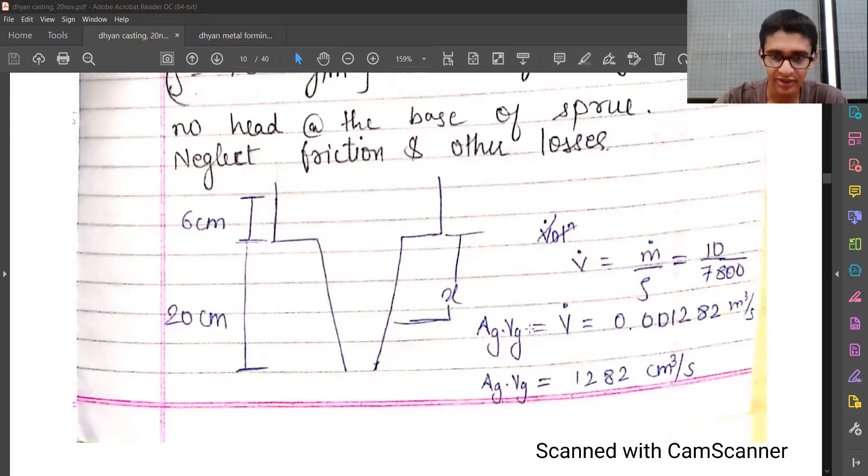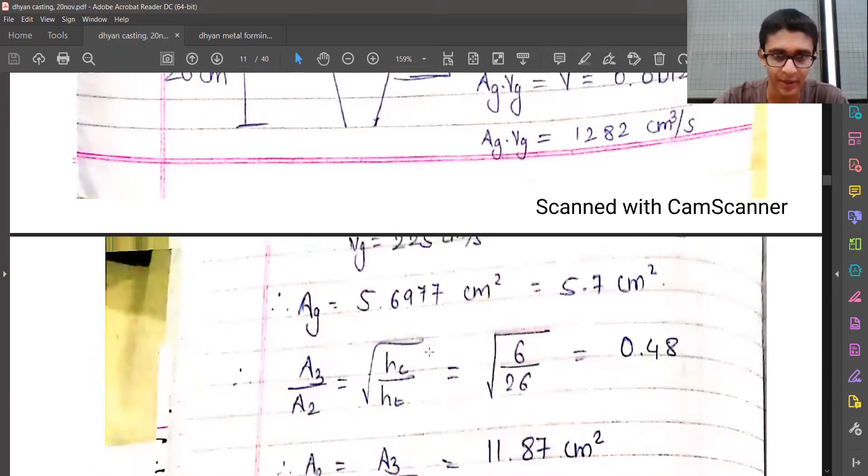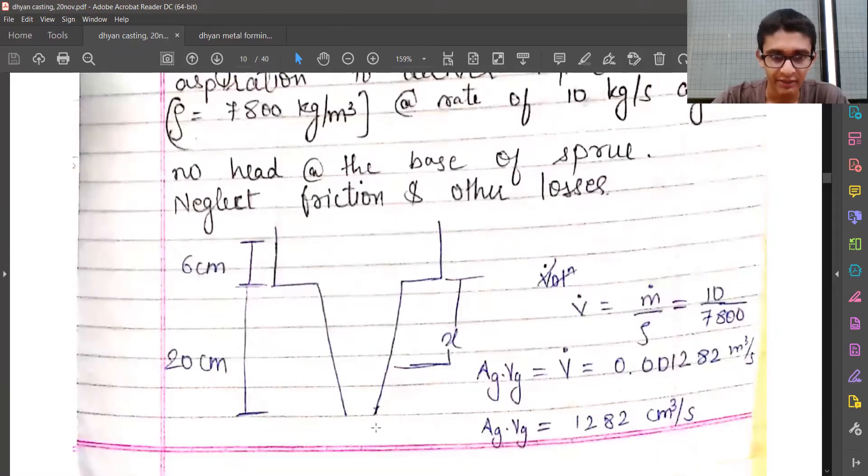And the velocity flow will be area into velocity. Volume flow - sorry, this is value, this is not velocity flow, this is volume flow. And volume flow will be area into velocity. Hence this is the case, area is obviously given.